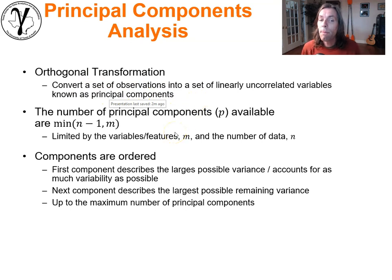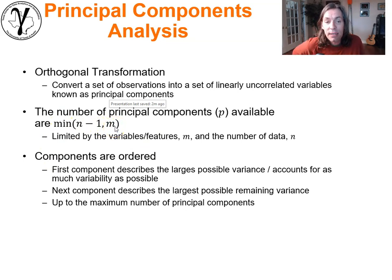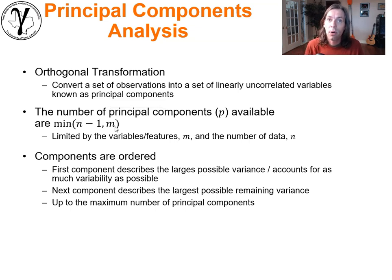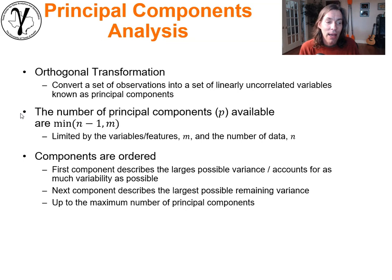The number of principal components p that we can create is either the minimum of n minus 1 or m. If we have lots of data, p equals m — we can have as many principal components as the dimensionality of the original dataset. But if n, the number of samples, is small, we cannot create a representation in dimensionality greater than n minus 1.